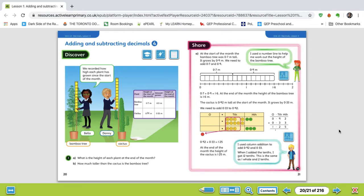So this first question is asking, what is the height of each plant at the end of the month and how much taller than the cactus is a bamboo tree? So that would be a subtraction problem. So the first one is an addition.